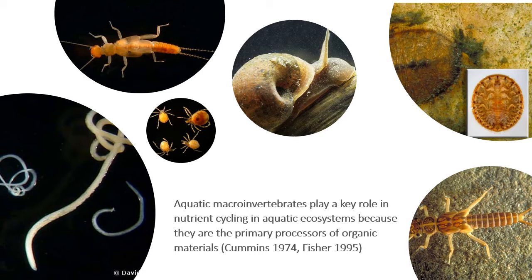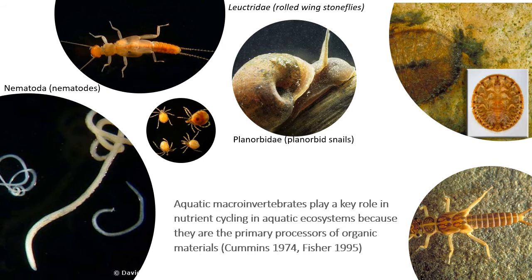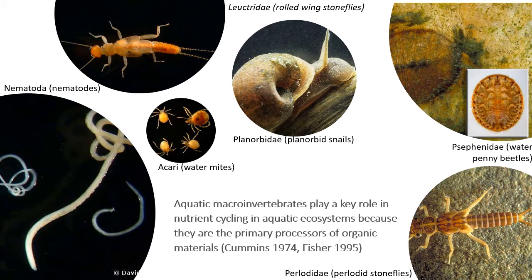What does all this mean and why are macroinvertebrates so important anyway? In the river continuum concept, Vanote et al. argue that a river's biological and chemical processes correspond to physical properties — they are explicitly linked, and if they are linked, then they are predictable and abstractable. Aquatic macroinvertebrates play a key role in nutrient cycling in aquatic ecosystems because they are the primary processors of organic materials. Some studies suggest they are responsible for processing up to 73% of riparian leaf litter that enters a stream. Aquatic macroinvertebrates are also ecologically significant because they integrate changes in both the aquatic and associated terrestrial environment, helping detect physical, chemical, and biological changes in the ecosystems where they live.